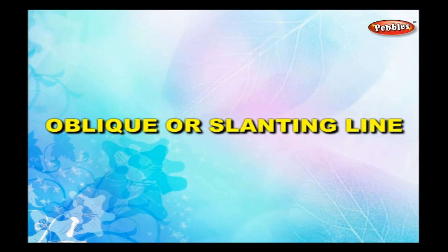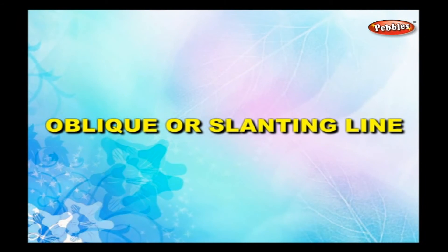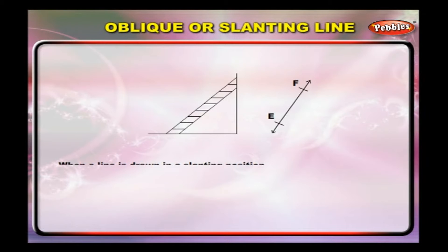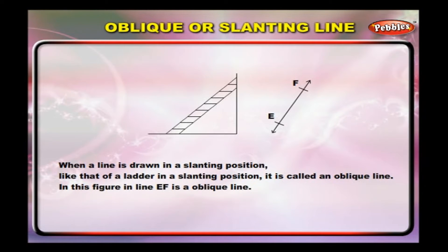Oblique or slanting line. When a line is drawn in a slanting position, like that of a ladder in a slanting position, it is called an oblique line. In this figure, line EF is an oblique line.